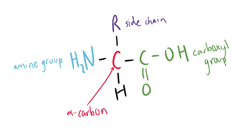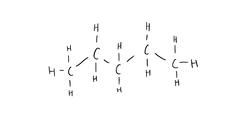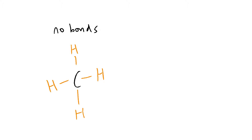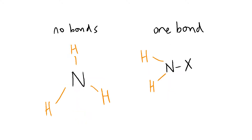First, some important notation. If you see a line like this, each corner is a carbon with as many hydrogens bonded to it as possible. Since carbon has four valence electrons, it will bond to four hydrogens if it has no bonds, three if it has one bond, and so on. The same concept holds for other elements, like nitrogen, which has three valence electrons.